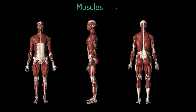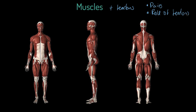Let's talk about muscles, and specifically, I want to talk about muscles and tendons. There are a couple of things I want you to draw out from this lesson: the role of both muscles and tendons, and I want you to recognise that there are pairs of muscles that work together. We're also going to look at the movements that each of these muscles actually produces.